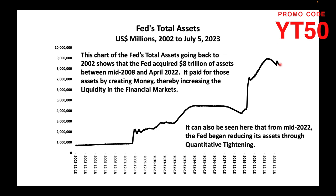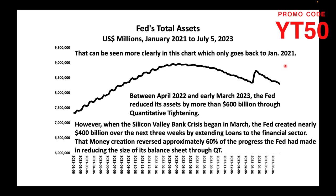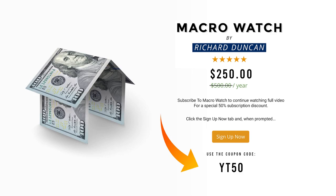It can also be seen here that from mid-2022, the Fed began reducing its assets through quantitative tightening. That can be seen more clearly in this chart, which only goes back to January 2021. Between April 2022 and early March this year, the Fed reduced its assets by more than $600 billion through quantitative tightening.